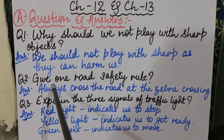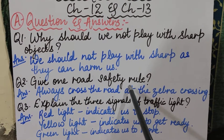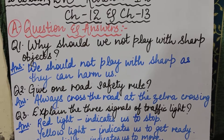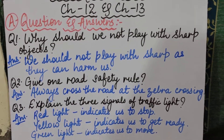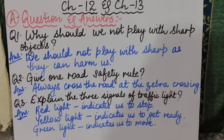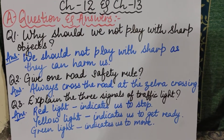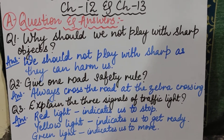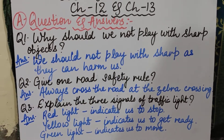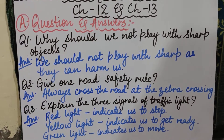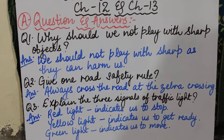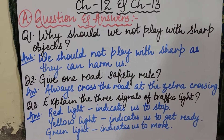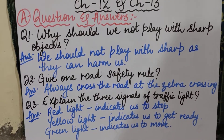Coming to the second question: Give one road safety rule. The most important road safety rule is: Always cross the road at the zebra crossing. When we need to cross, we should always cross the road at the zebra crossing. Is that clear?